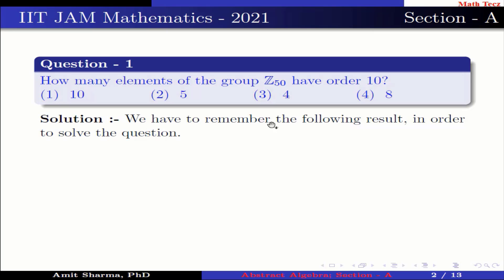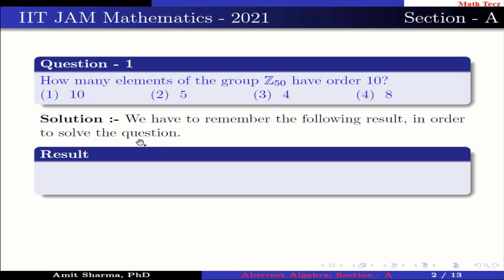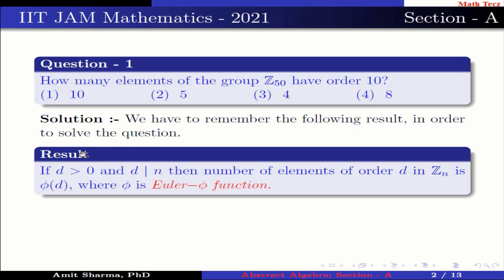We have to remember the following result in order to solve the question. Result: if d is greater than 0 and d divides n, then the number of elements of order d in Zn is phi(d), where phi is the Euler phi function.